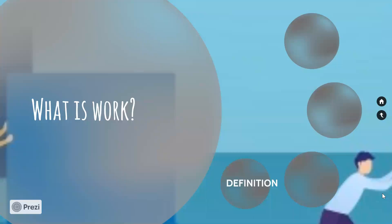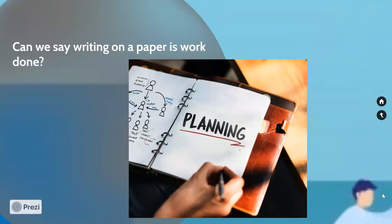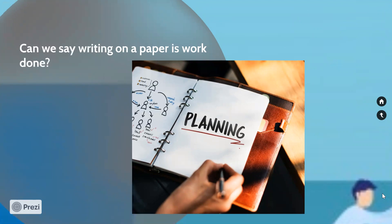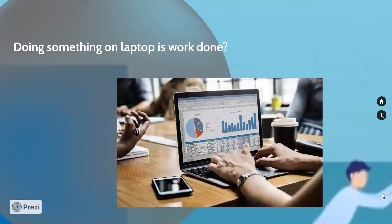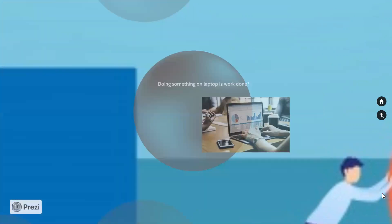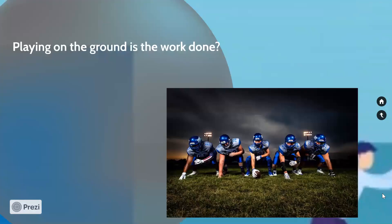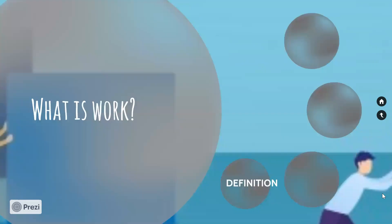That's why we need to understand what work means in physics. I'll give you a few examples. Can we say writing on paper is work done? Or working something on a laptop — can we say that we are doing some work? In day-to-day life we might not consider these as work done. That's why we define what work in physics means.